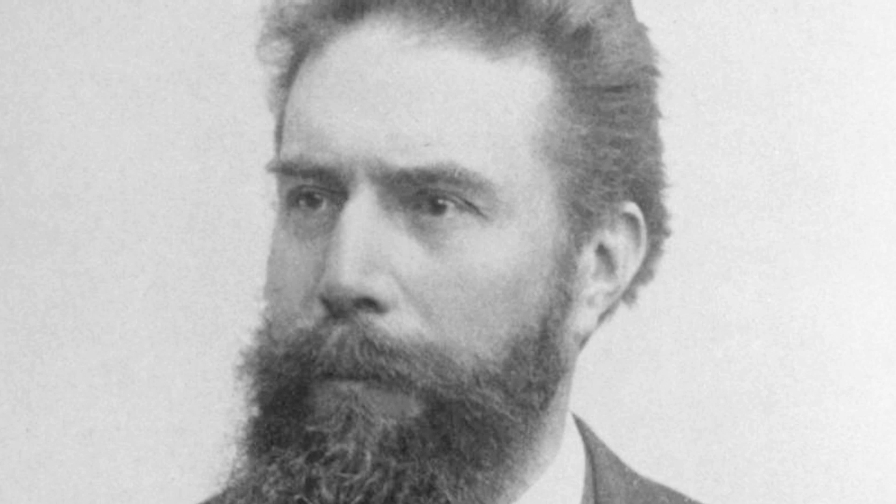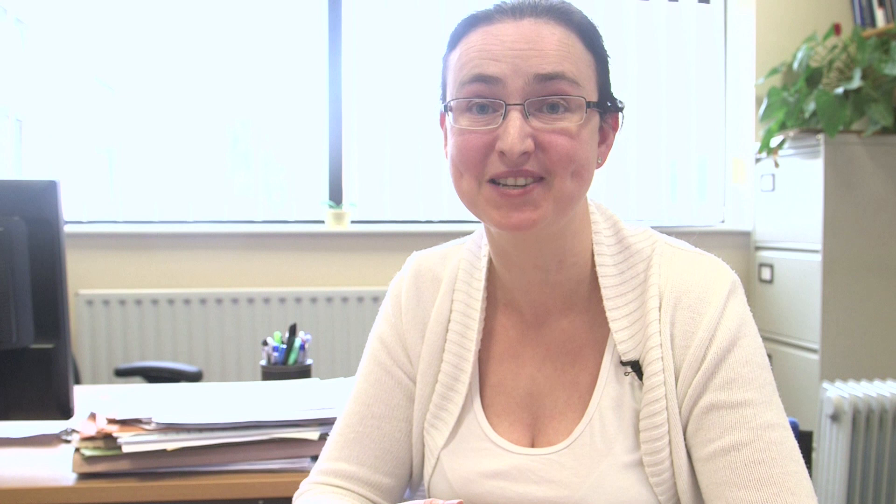There are few people who get their names on elements — bohrium, roentgenium, and so on — but that only happens after people are dead. Ken Wade has his name associated with a set of rules that explain the shapes of a whole series of boron compounds. He came up with this theory which he called polyhedral skeletal electron pair theory, but we tend to call them — I call them to my second years — Wade's rules.